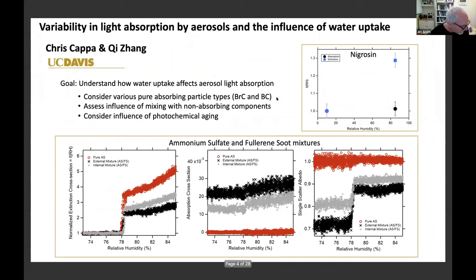Kappa, with Dubé on deck. We're interested in how water uptake influences light absorption by particles. Less work has been done on water specifically, even though water is hygroscopic and black carbon is not. We've developed a humidified CAPS SSA system to characterize absorption under dry and humid conditions, looking at various mixtures in the lab. Early results include ammonium sulfate and fullerene soot mixtures, both internal and external, and nigrosine. We'll go on to study brown carbons and the influence of photochemical aging to understand how water uptake might influence absorption.